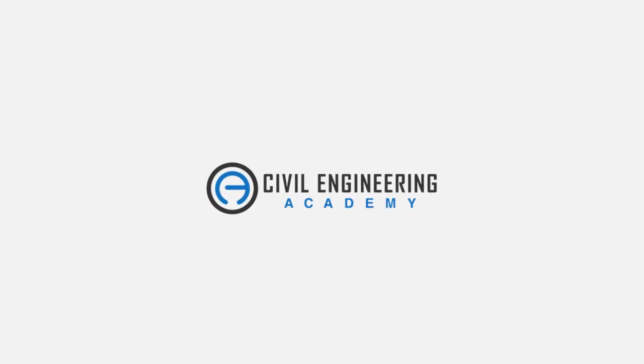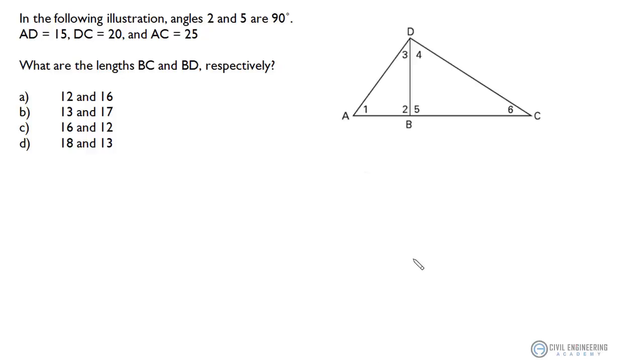Hey there engineers, welcome to Civil Engineering Academy where we're looking at a problem from analytic geometry and trigonometry. It reads like this: in the following illustration angles 2 and 5 are 90 degrees, AD the length AD equals 15, DC equals 20, and AC equals 25.